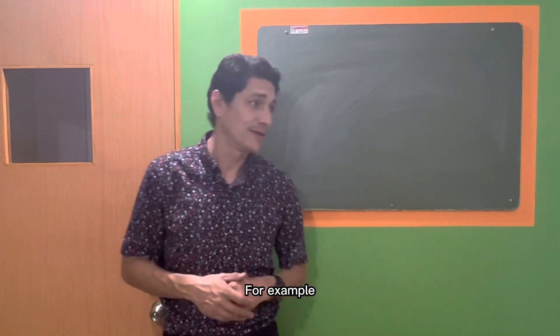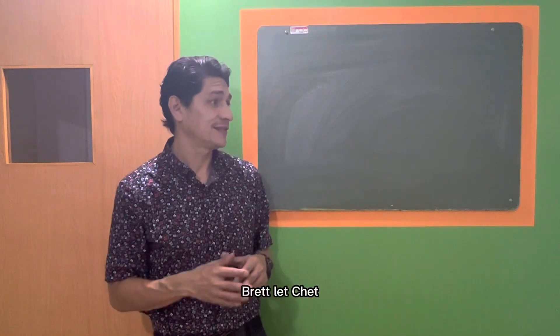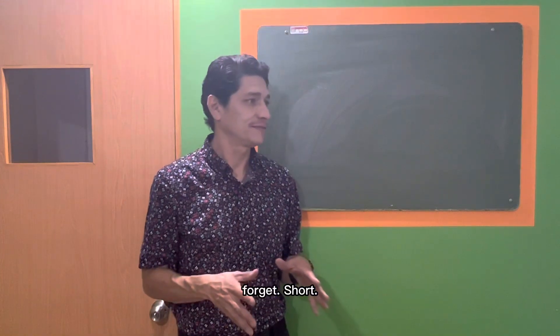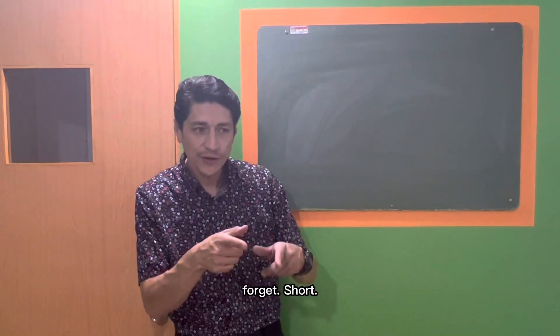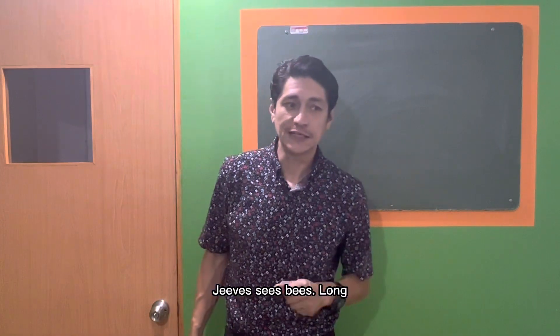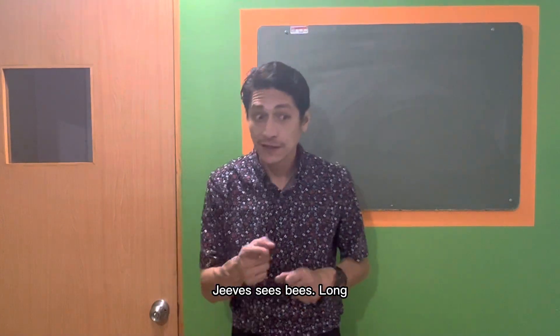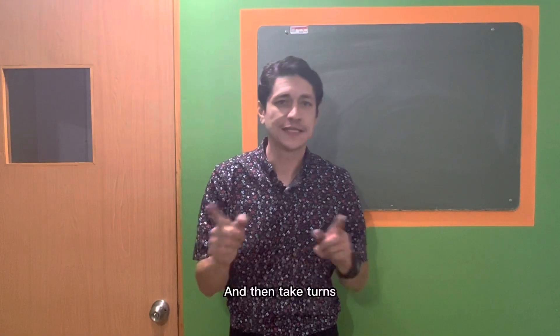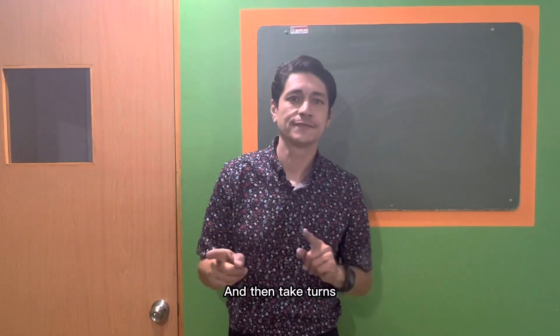For example: Brett, let, Chet, forget — short. G's, C's, B's — long. And then take turns.